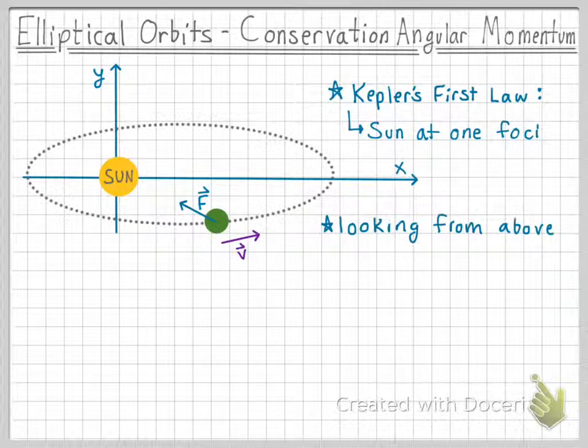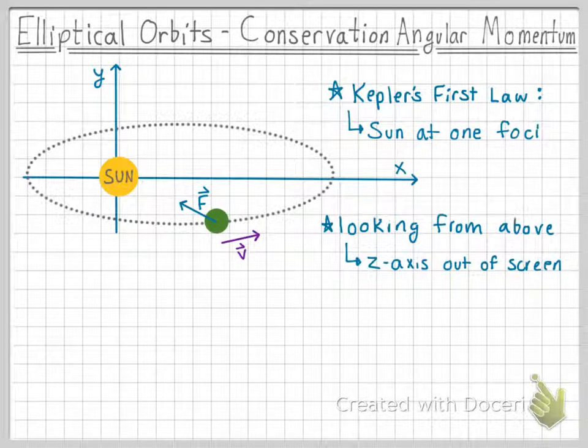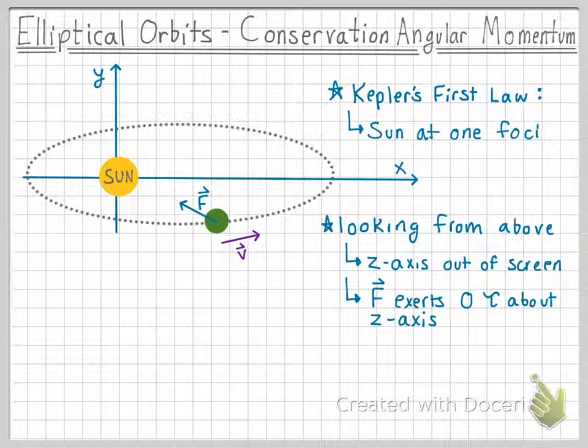If we assume that we are looking at this diagram from above, we would say that the z-axis comes out of the screen. We know that the gravitational force would exert no torque or angular force about the z-axis, since the force is perpendicular to the z-axis. And since there is zero net torque about the z-axis, we know that angular momentum will be conserved.